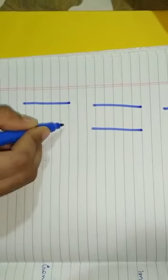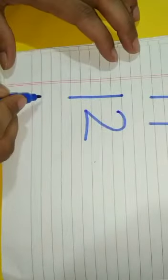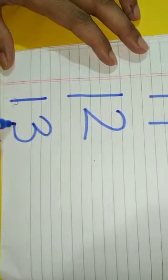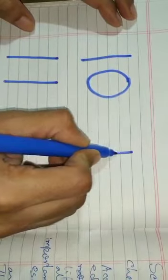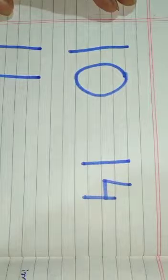Write 1 and beside the 1, write 2. This is 12. Write 1 and beside the 1, write 3. This is 13. Write 1 and beside the 1, write 4. This is 14.